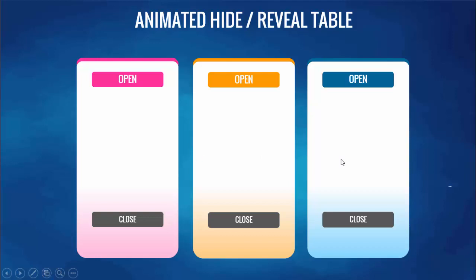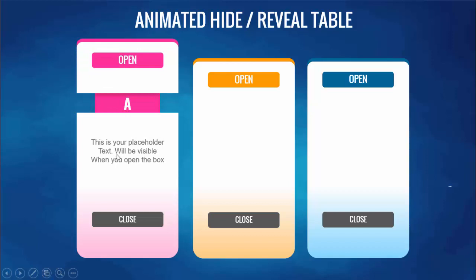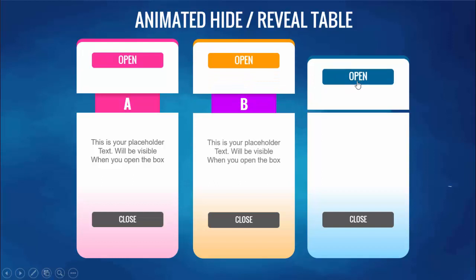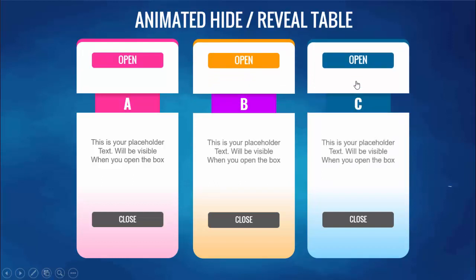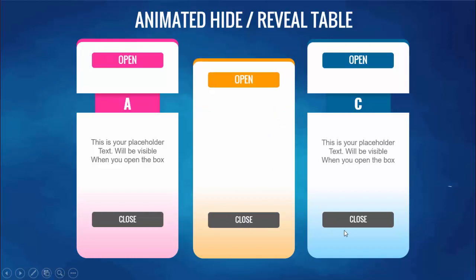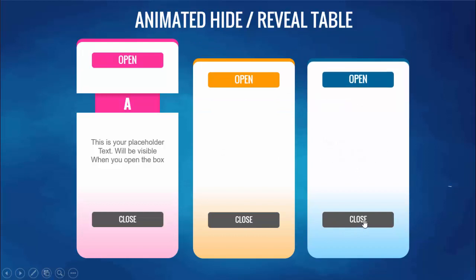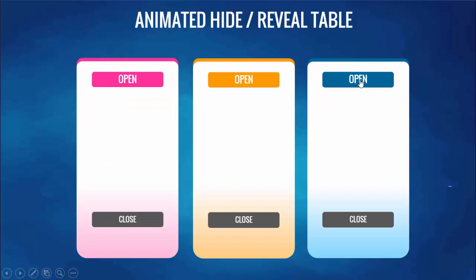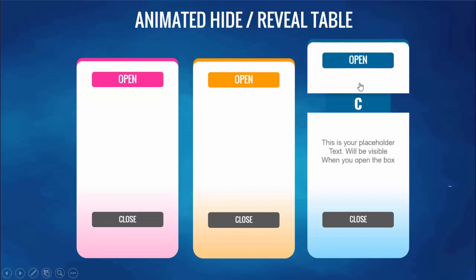If I want to see what's in option A, the text will reveal only when you click 'open.' You can see the text is revealed. If I want to reveal option B, I'll click open. Similarly for option C. And I can just come and close option B and option C, or open option C only.